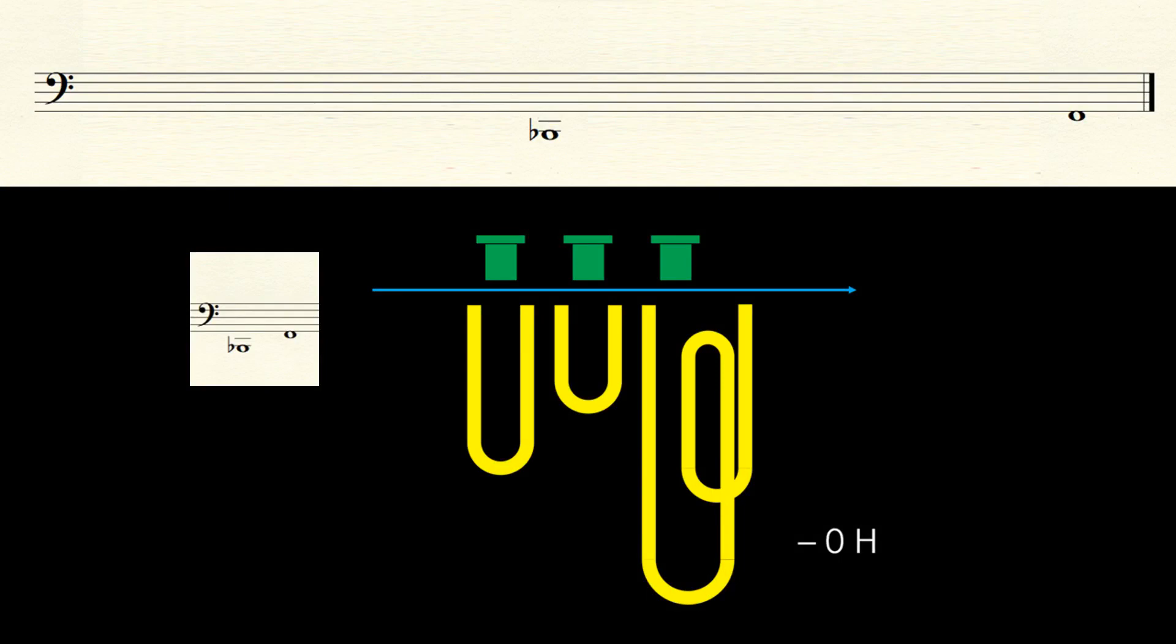Next, imagine a fingering that could lower the natural harmonic series by a semitone, so B-flat and F become A and E. We can therefore now access four notes: A, B-flat, E, and F.